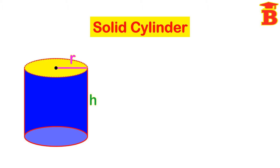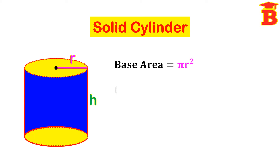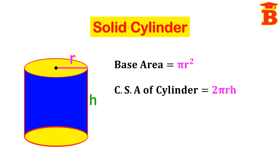Now let us see the formulas. Here the base is a circle, so the base area is pi R square. The curved surface area (CSA) of the cylinder is 2 pi R H.